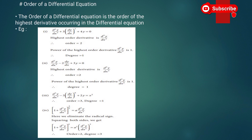The order of a differential equation is the order of the highest derivative occurring in it. For example, d²y/dx² + 3(dy/dx)² + 4y = 0. The highest order derivative is d²y/dx², so the order is 2. The power of that highest order derivative d²y/dx² is 1, so the degree is 1.